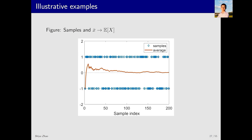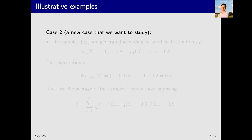This diagram, which we also discussed in the Monte Carlo lecture, illustrates the idea. When positive 1 and negative 1 each have probability 0.5 and I take 200 random samples, I get approximately 100 samples of positive 1 and 100 samples of negative 1. After averaging, you can see that initially the estimate is not very accurate but over time it gradually approaches the true expectation, which in this case is zero.